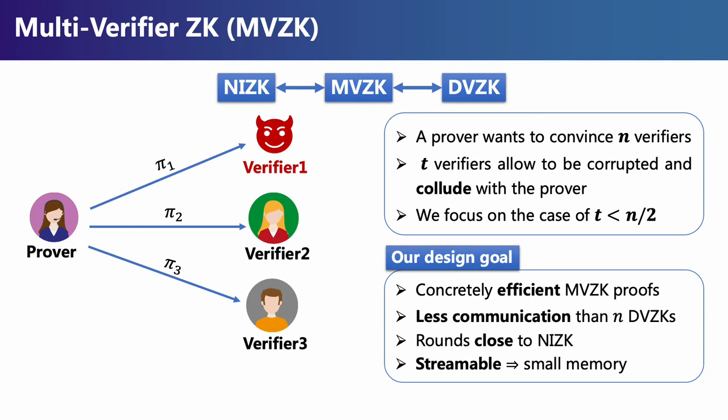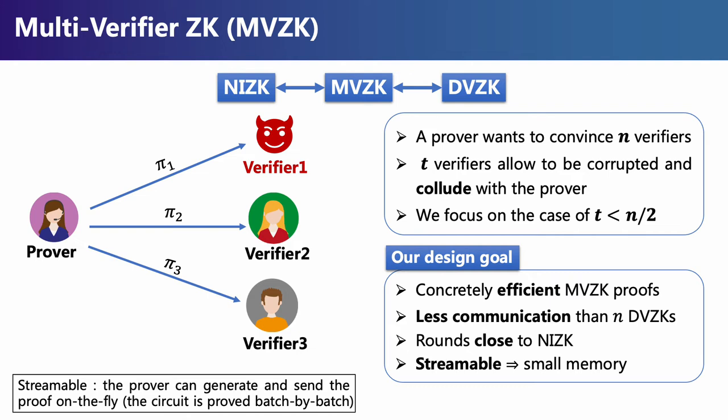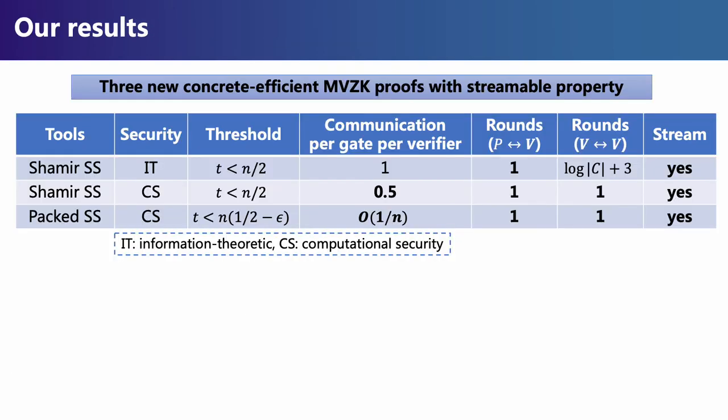Streaming a proof means the prover can generate and send the proof on the fly, and no party needs to store the whole proof during protocol execution. We proposed three new concretely efficient MZK proofs with the streamable property. The first protocol is information-theoretic, and the other two protocols achieve computational security.